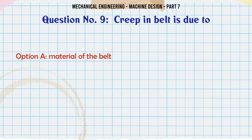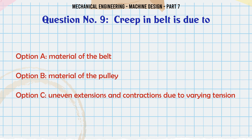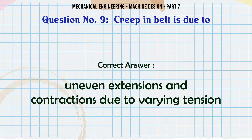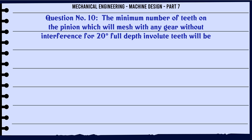Creep in belt is due to: a) material of the belt, b) material of the pulley, c) uneven extensions and contractions due to varying tension, d) all of the above. The correct answer is: uneven extensions and contractions due to varying tension.